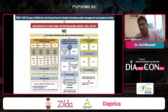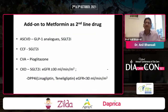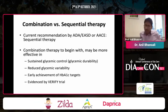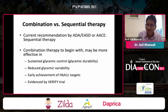The guideline is clear: if a patient has established CVD or heart failure, the drug of choice is SGLT2 inhibitor or GLP-1 receptor agonist. Otherwise, there is a plethora of drugs available. As a summary for add-on to metformin: for ASCVD, use GLP-1 or SGLT2; for CCF, add SGLT2; for CVA, pioglitazone is effective with data from the IRIS trial; for CKD, use SGLT2 if eGFR is more than 30; if eGFR is less than 30, use linagliptin or canagliflozin. Combination therapy provides sustained glycemic control, reduced glycemic variability, and early achievement of targets.